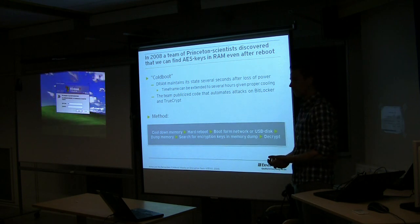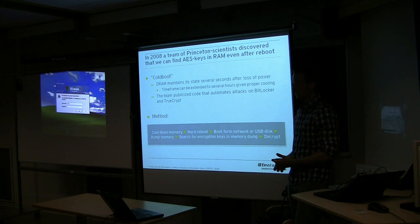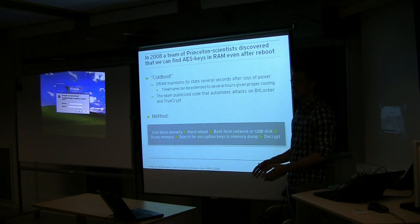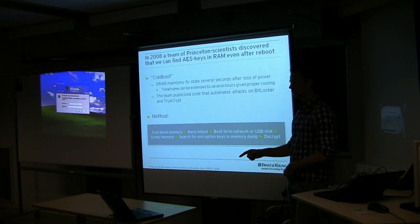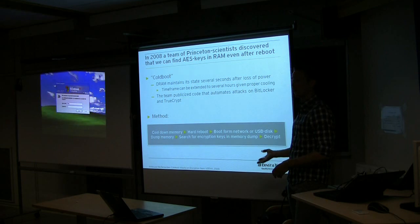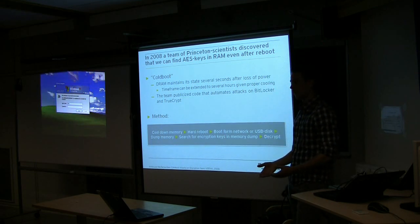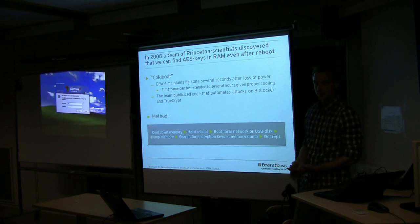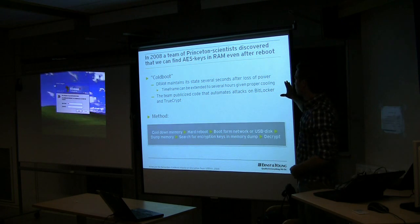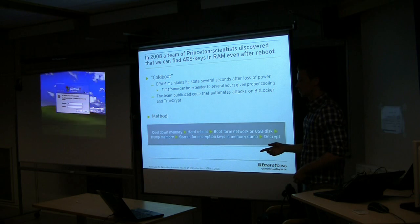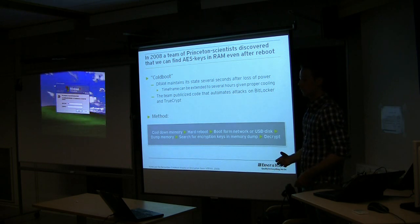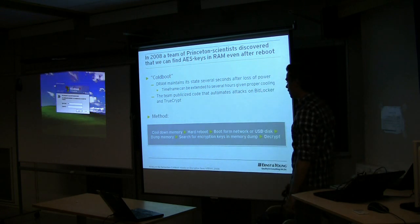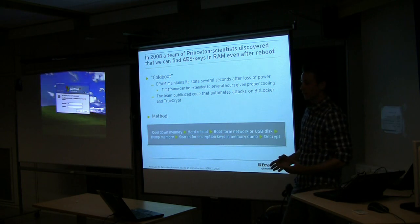Password attacks on the Hibernate file work as long as the drive is not full disk encrypted — because if the system drive is full disk encrypted, the Hibernation file will be on an encrypted volume, and if the machine is off you won't have access to it. But the Princeton guys found a way to do the cold boot attack, which I know was mentioned last year. I'm going to demonstrate it because it's not that hard — people think you have to use liquid nitrogen, but it's not really that difficult and it works.